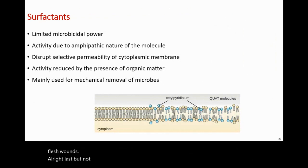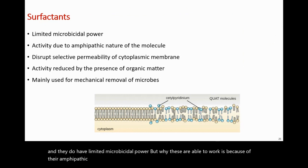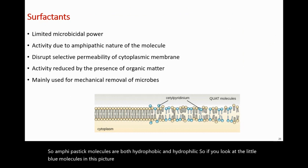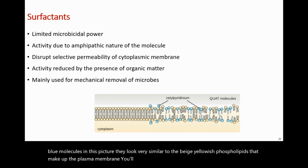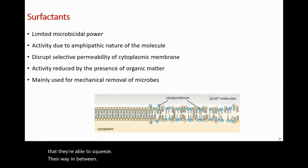Last but not least, surfactants — things like soaps and detergents. They have limited microbicidal power, but they work because of their amphipathic nature. Recall from unit one that amphipathic molecules are both hydrophobic and hydrophilic. Looking at the image, the small blue surfactant molecules look very similar to the phospholipids that make up the plasma membrane, except surfactants have only one tail instead of two. They behave enough like a phospholipid that they're able to squeeze in between the phospholipids and alter the permeability of the membrane.